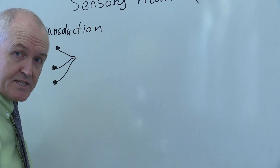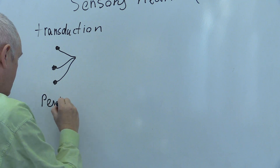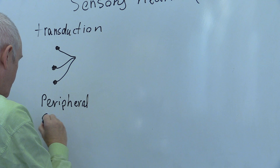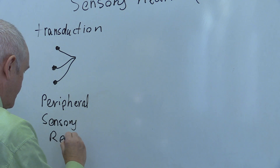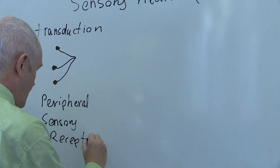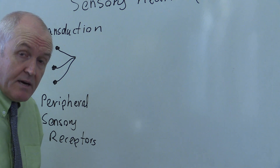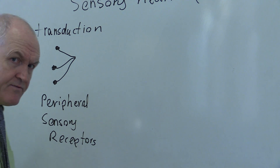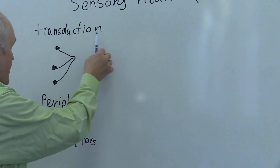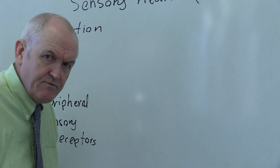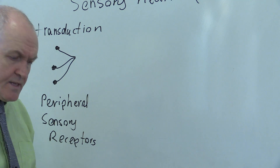That transduction is taking place in these peripheral sensory receptors. The same applies to pain receptors: if there is a painful stimulus damaging the body tissues, that will cause transduction in the specialized pain receptors called the nociceptors.